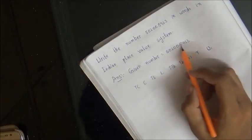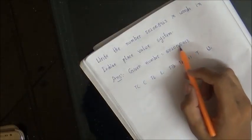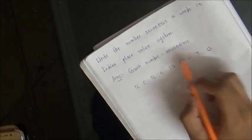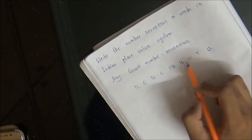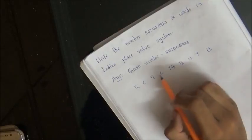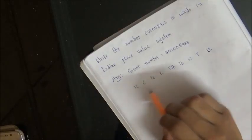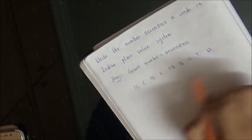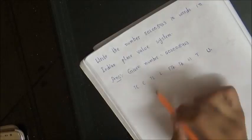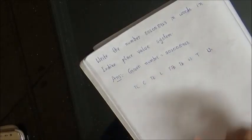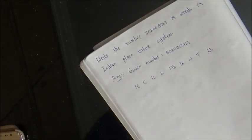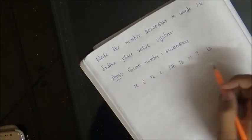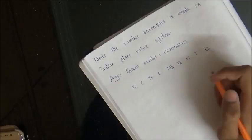So we confirm nine positions in total — one through nine — covering units all the way up to ten crores. These are the nine places in the Indian place value system.